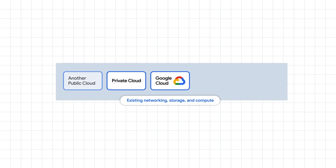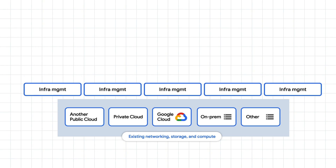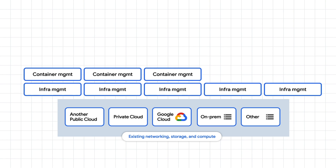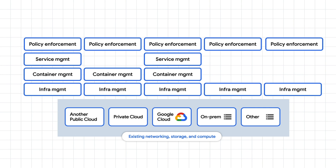As an enterprise, it is very common to have existing networking, storage, and compute on multiple clouds and in your own data centers. On each of these platforms, you need to manage infrastructure. Let's say you use containers on the clouds and develop apps using services on Google Cloud and AWS. Regardless of platform, you will need policy enforcement across your IT footprint.